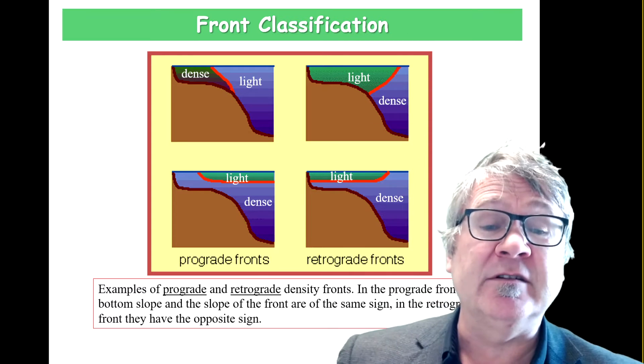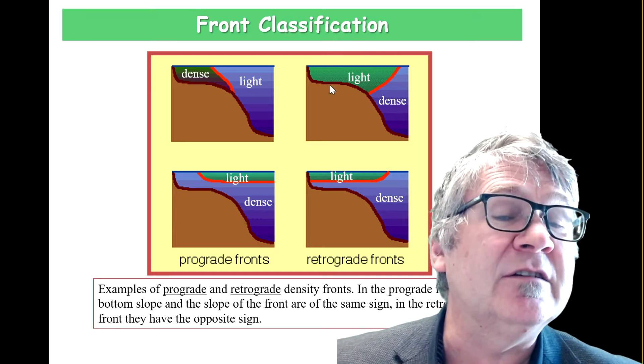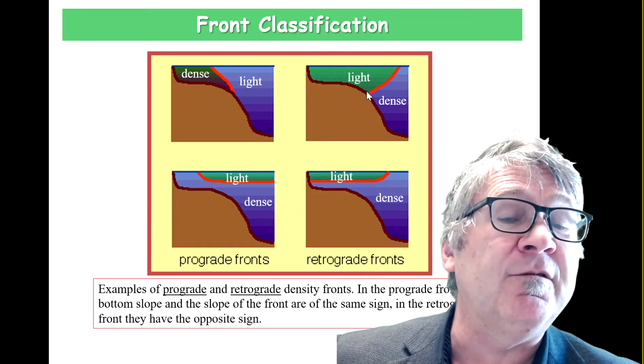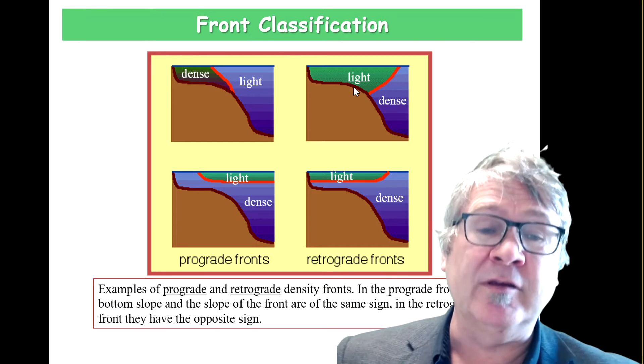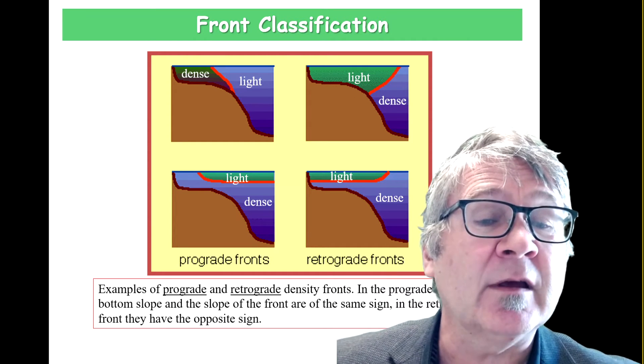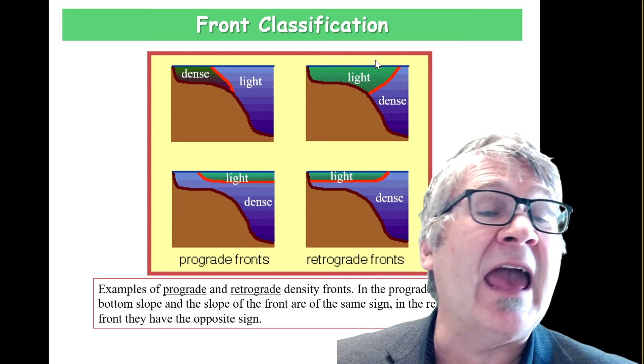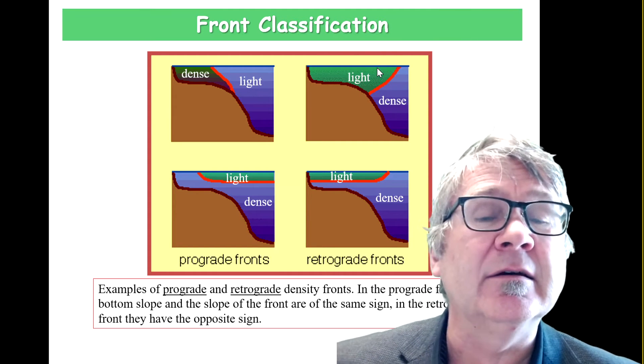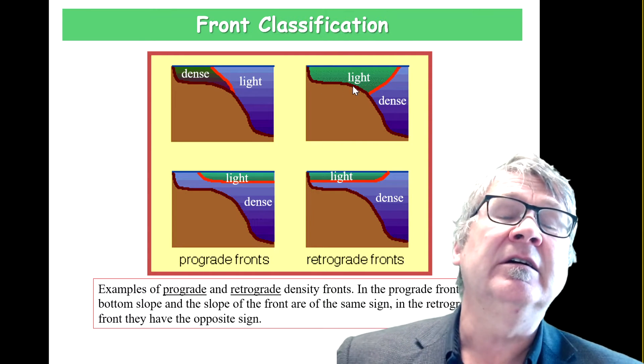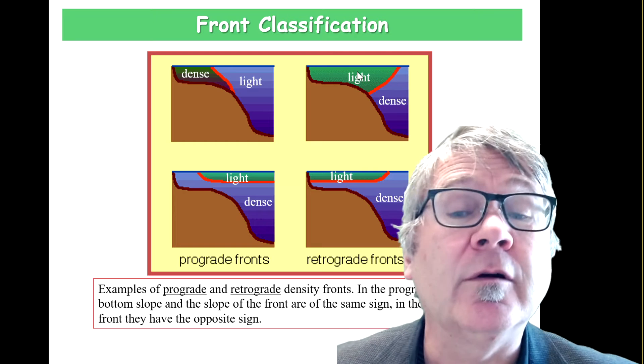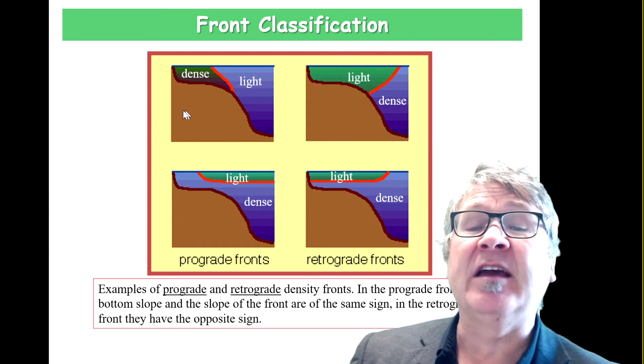Above that you have the same situation here, except that there is a connection with the seafloor. This can also happen with river discharge. Another example of what can produce light water is actually atmospheric heating and heat up the water and produce a light shelf water condition.